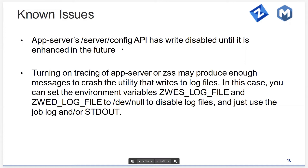The other known issue: the system utilities we use to simultaneously write to Unix files and the job log appear to sometimes be overwhelmed when you have too much tracing turned on, and they will just stop writing the log file. If you encounter this issue when tracing, you can use the environment variables ZWES and ZWED log file to set that path to /dev/null, which disables writing the Unix files. Then you'll just have your job log. This only appears to happen when you're tracing.